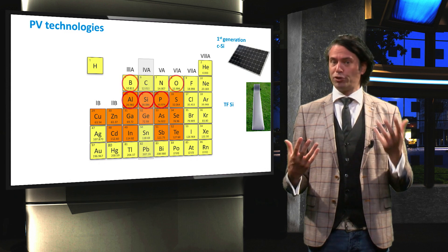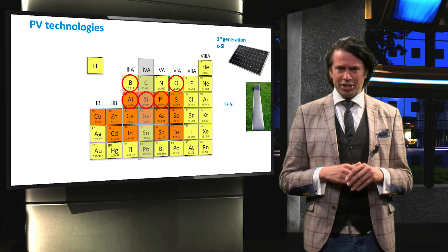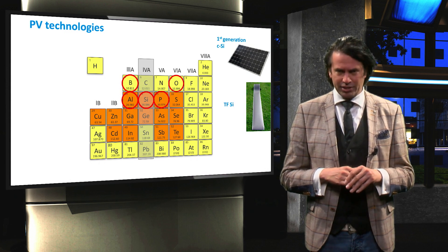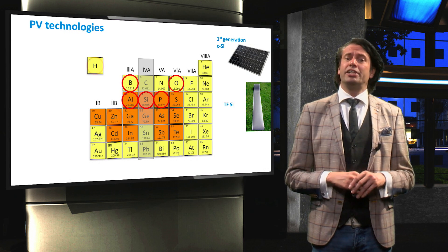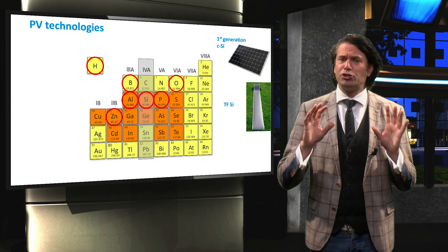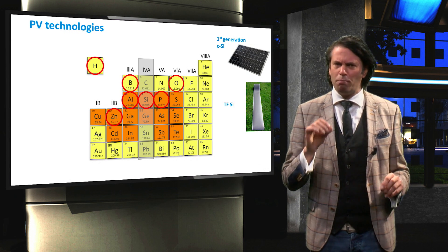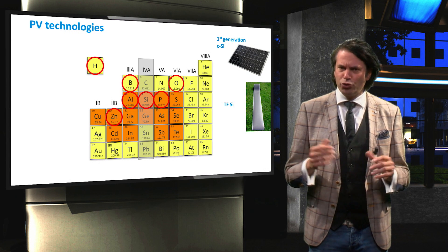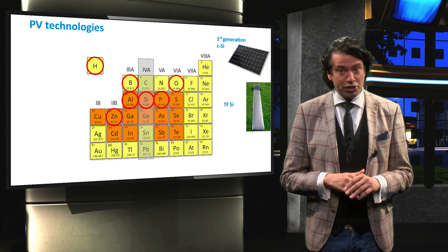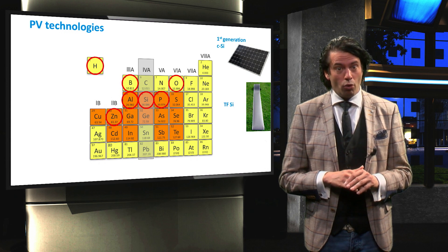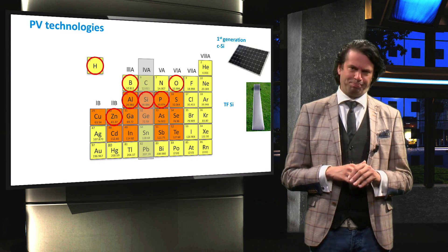These amorphous silicon solar cells use many of the same materials as crystalline silicon. Additionally, hydrogen is used for the passivation of the amorphous structure and zinc is used for the transparent conductive oxide layer, or TCO layer.